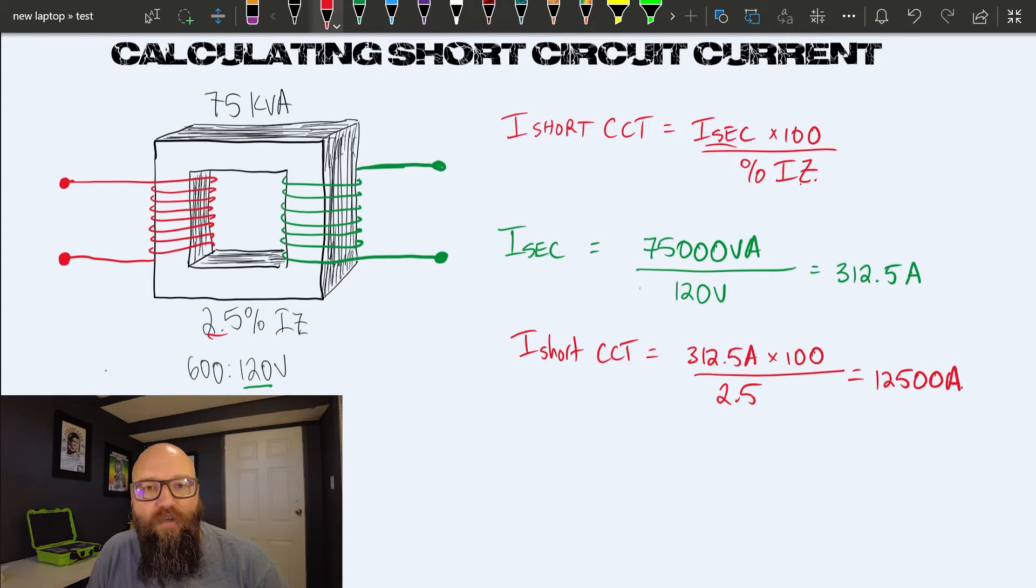Why is that number important? If I'm selecting overcurrent devices, one thing I need to be cognizant of is what is the interrupting rating of my device? Can my device handle that 12,500 amps? A standard interrupting rating on an overcurrent device is generally 10,000 amps if not marked. That would not sufficiently protect us in a short circuit. I would have to go with something at least equal to my short circuit current or higher. I can always be higher with interrupting rating. My short circuit current can never be higher than my interrupting rating.